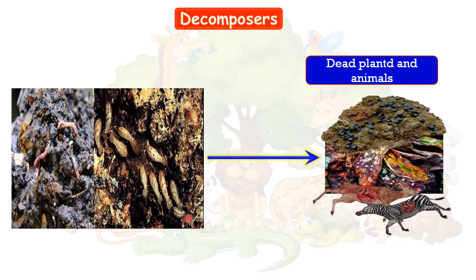You must be thinking: what is the difference between decomposers and scavengers? Scavengers eat dead animals, but decomposers eat decaying plants and dead animals. Decomposers help dead bodies and dead plants to decompose and mix with soil, forming humus. Humus is a mixture of decomposed matter containing lots of nutrients which are used by plants. This is how decomposers help us.